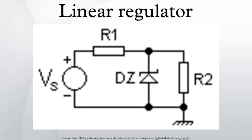All linear regulators require an input voltage at least some minimum amount higher than the desired output voltage. That minimum amount is called the dropout voltage. For example, a common regulator such as the 7805 has an output voltage of 5V, but can only maintain this if the input voltage remains above about 7V before the output voltage begins sagging below the rated output. Its dropout voltage is therefore 7V − 5V = 2V. When the supply voltage is less than about 2V above the desired output voltage, as is the case in low voltage microprocessor power supplies, so-called low dropout regulators must be used.